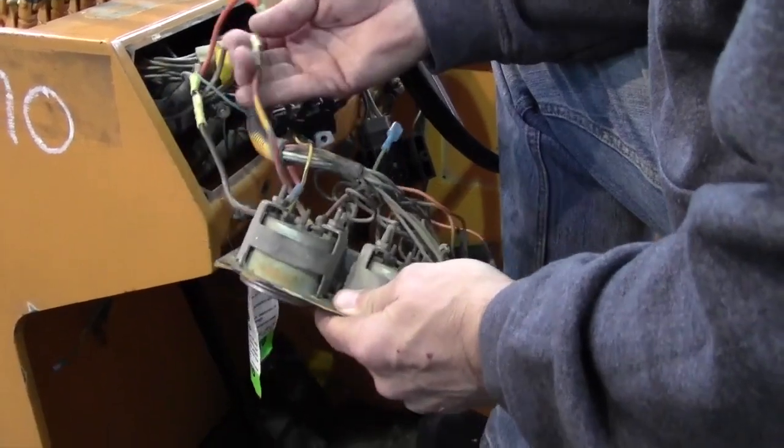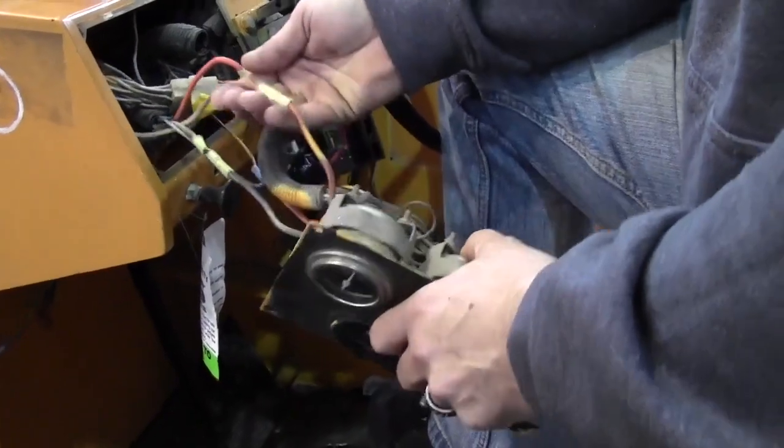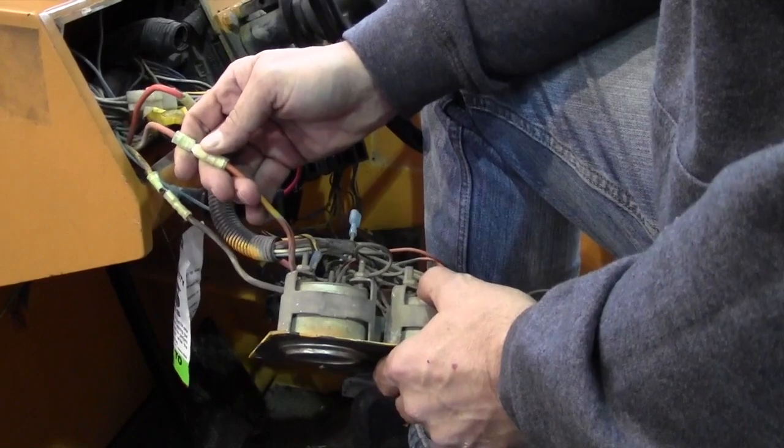This right here is a B plus line to the amp meter, which is straight from the battery with no fusing line. And look, it's got a piece of metal hanging out there.